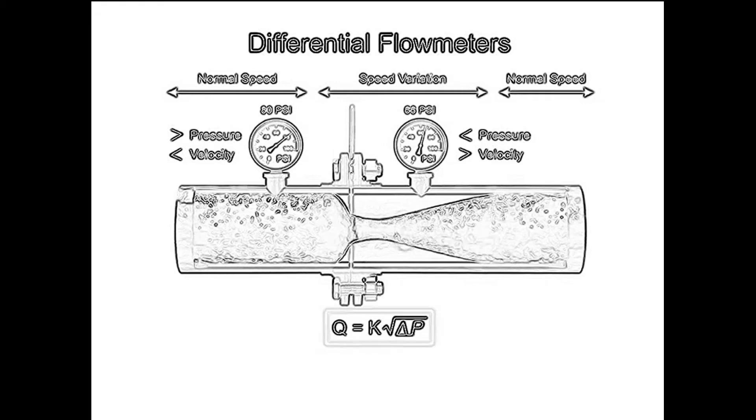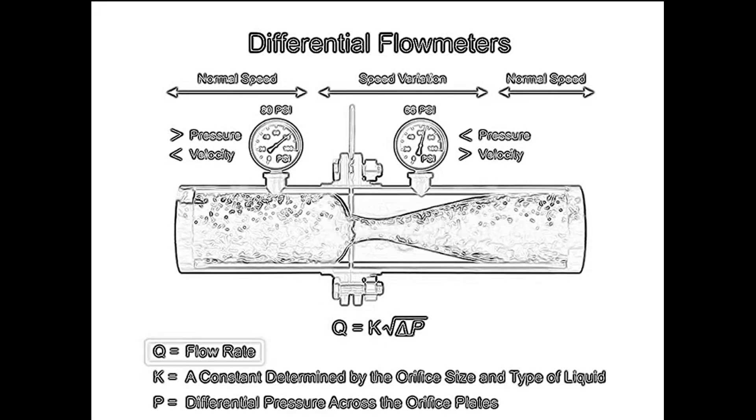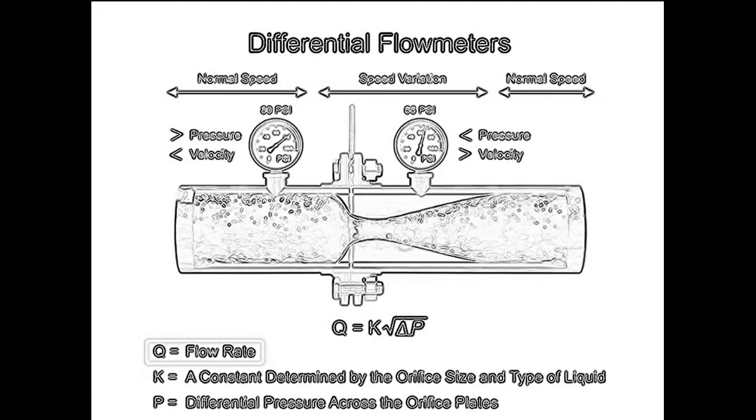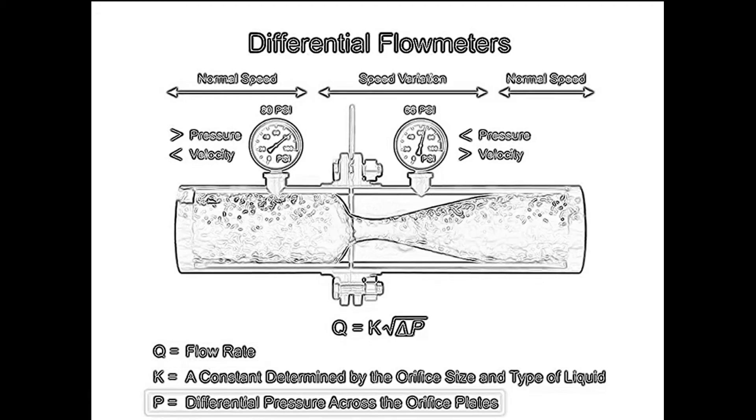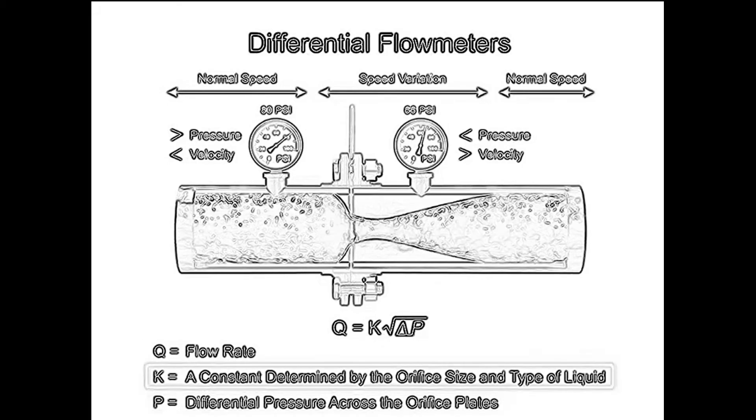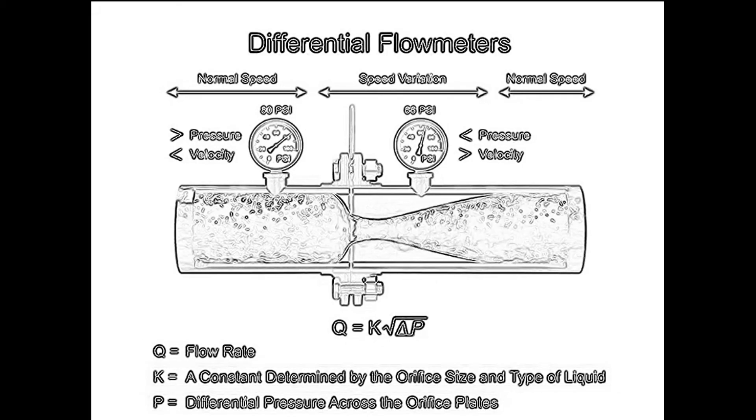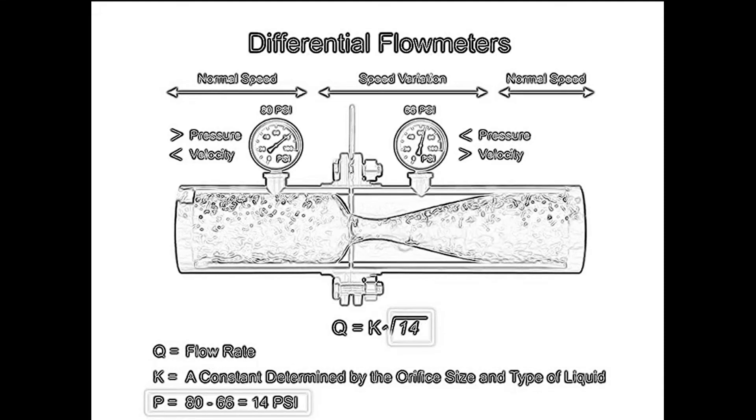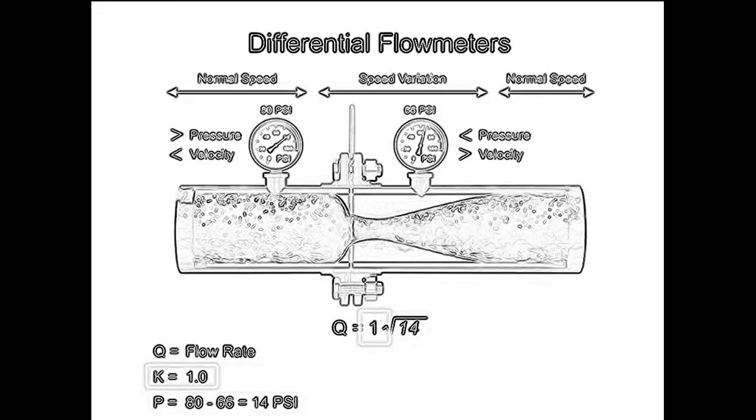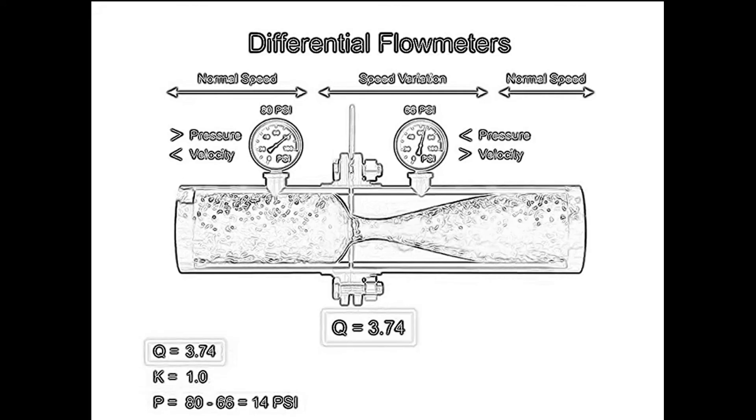The flow rate Q of a fluid through an orifice plate increases in proportion to the square root of the pressure difference on each side multiplied by the K factor. For example, if the differential pressure increases by 14 psi with a K factor of 1, the flow rate is increased by 3.74.